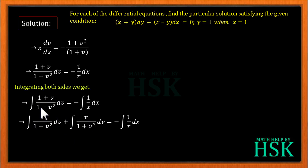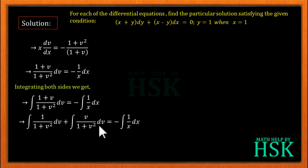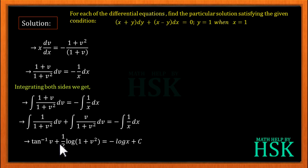The integral ∫1/(1 + v²) dv = tan⁻¹(v), and ∫v/(1 + v²) dv = ½ log(1 + v²) — this can be solved using substitution method. And ∫1/x dx = log x. So the result is: tan⁻¹(v) + ½ log(1 + v²) = -log x + C.